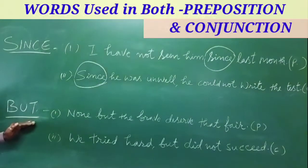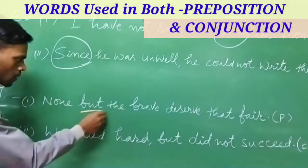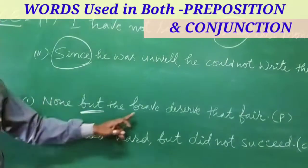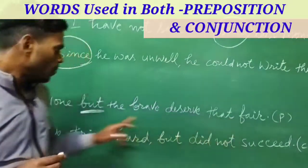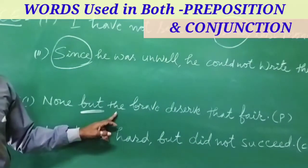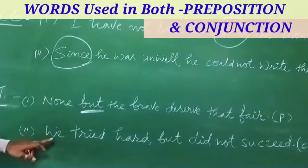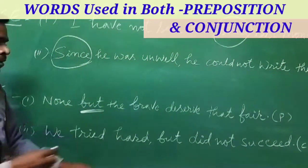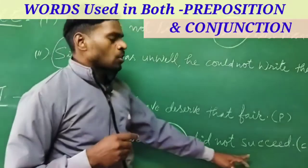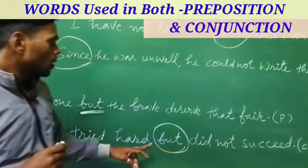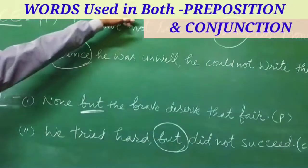Next, 'but.' Example: 'None but the brave deserve that fare.' Here 'but' is used as a preposition. Whereas in the sentence 'We tried hard but did not succeed,' 'but' is used as a conjunction.